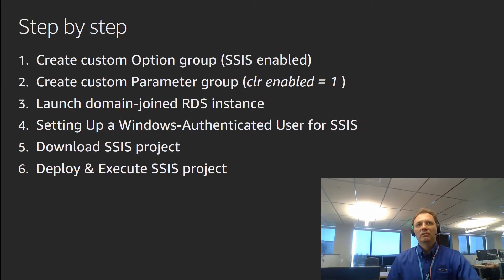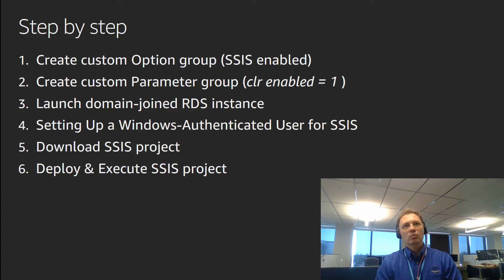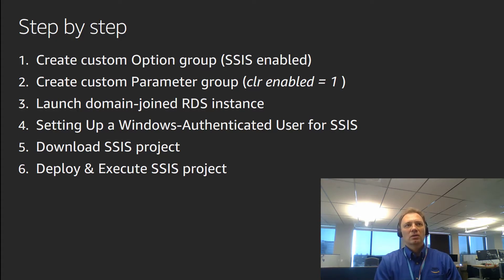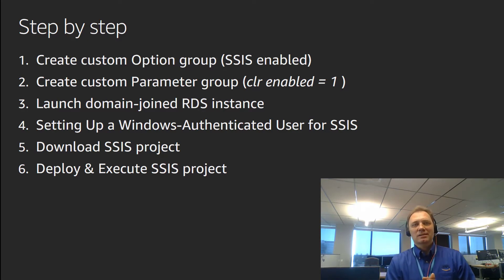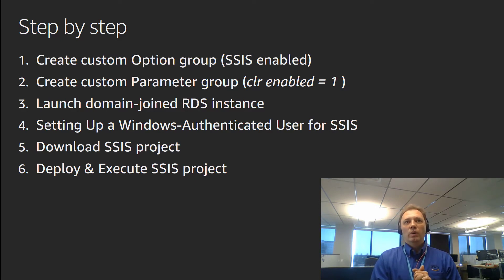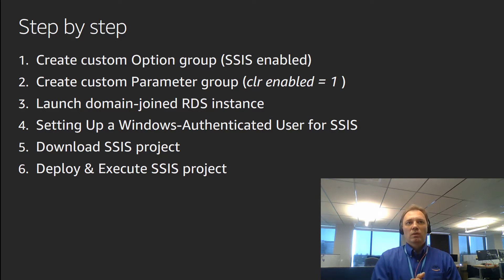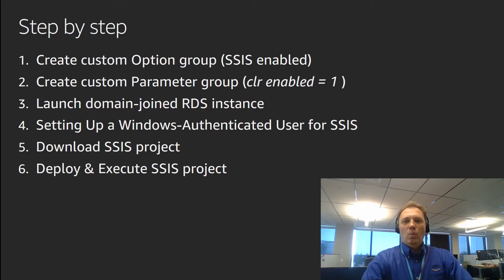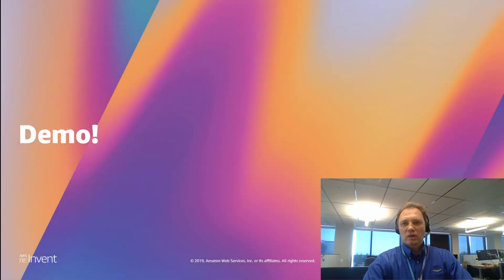Step by step at a high level: first we're going to create the custom option group where we'll enable SSIS. Second, we'll create the custom parameter group where we'll enable CLR. Then we will launch a couple of domain-joined RDS instances. Then we will spend some time configuring the Windows auth user for SSIS. And we will finish the demo with downloading, deploying, and executing an SSIS package. With that, let's jump straight to the demo.